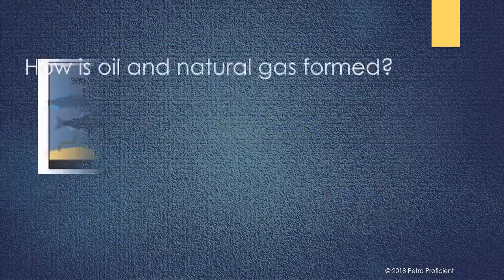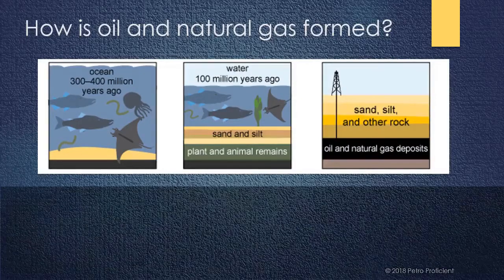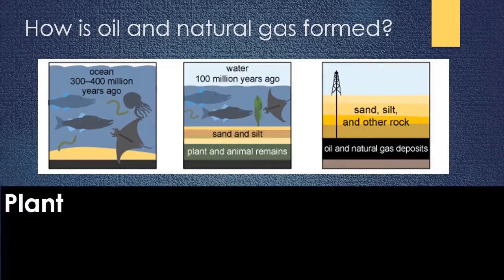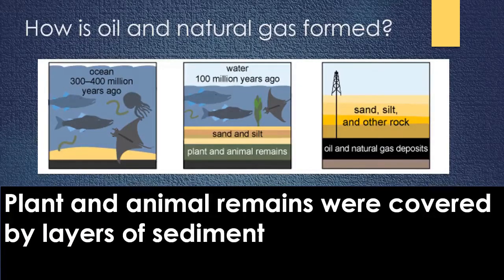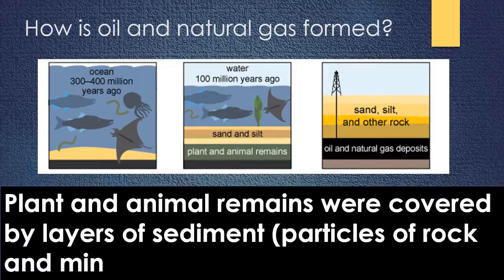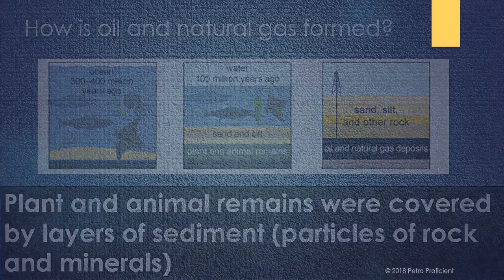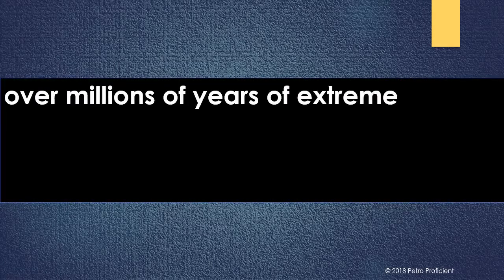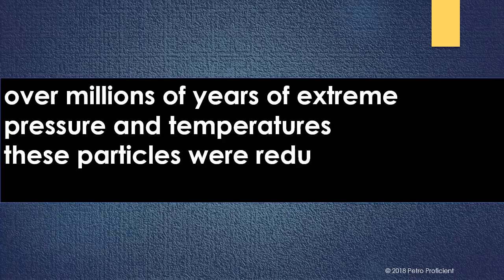How is oil and natural gas formed? Plant and animal remains were covered by layers of sediment — particles of rock and minerals. Over millions of years of extreme pressure and temperatures, these particles were reduced to liquid hydrocarbons — oil — or gaseous hydrocarbons.